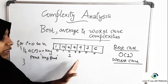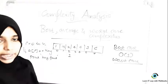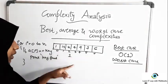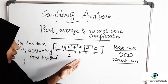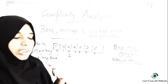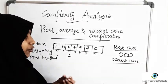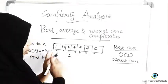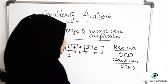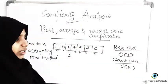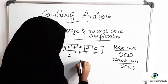The worst case happens when you have to traverse the entire array to find the required element, or even worse, when the element is not present in the array at all. For example, if the element is not present, you must traverse all array elements to be confident it's absent. In that case you traverse all n indices, so the worst case complexity is O(n).